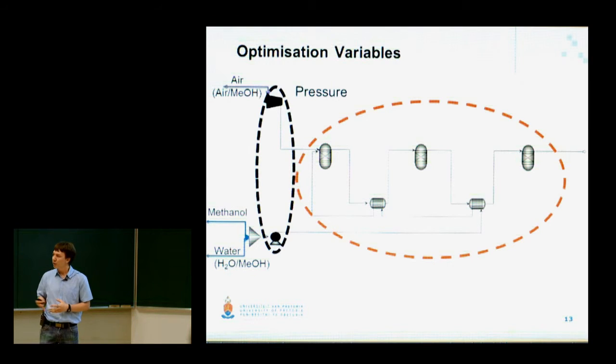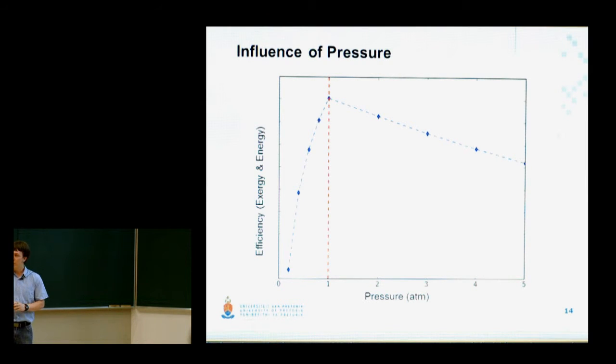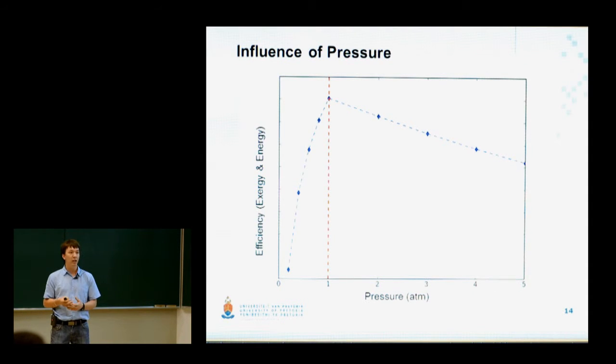After the optimization simulations were completed and I had a look at the data, it was quickly realized that one atmosphere, which was the assumed atmospheric pressure for this system, is where you want to be. To illustrate this point, let's look at the following graph. As you can see, when the pressure of the system was decreased, a rapid decrease in the exergy and energy efficiencies was observed. But also when the pressure was increased, a decrease in efficiency was also observed. Therefore it was quite easy to conclude one atmosphere is where you want to be.